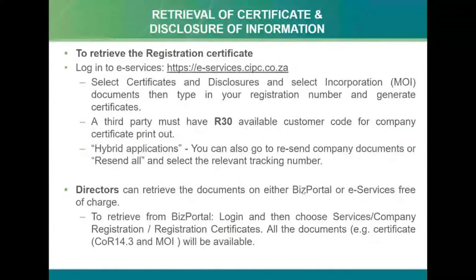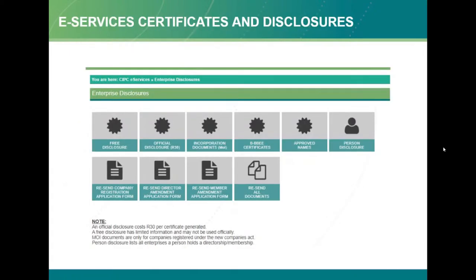Directors can also retrieve documents on Biz Portal or e-services free of charge - you can retrieve the COR 14.3 and the MOI. If you want to see if a specific person has any companies or is a director of a specific company, click on person disclosure and type in the ID number - it will show if that person is a director of a company.